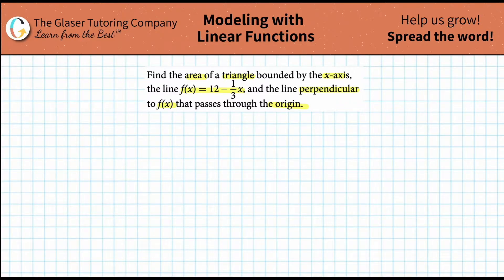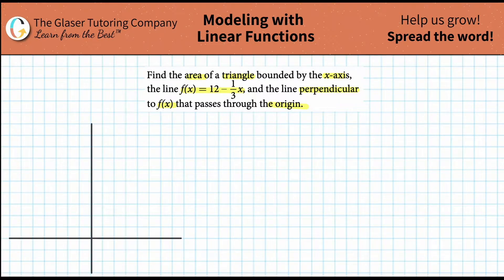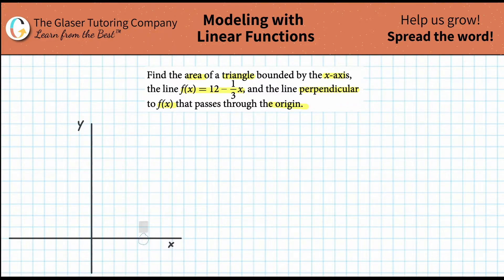What we need to do when we've got a lot of things going on is take it piece by piece. So first let's draw a set of axes — x and y. The first boundary is the x-axis, so let's color that red so it kind of stands out. Then the next line is f of x is equal to 12 minus one-third x.